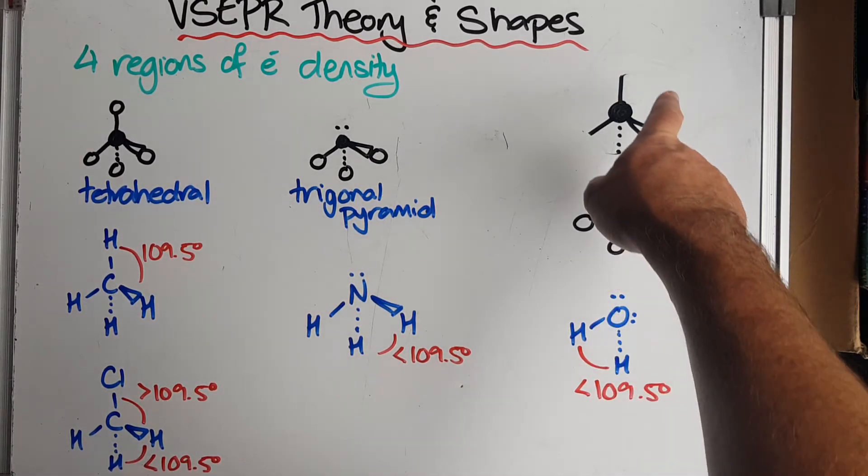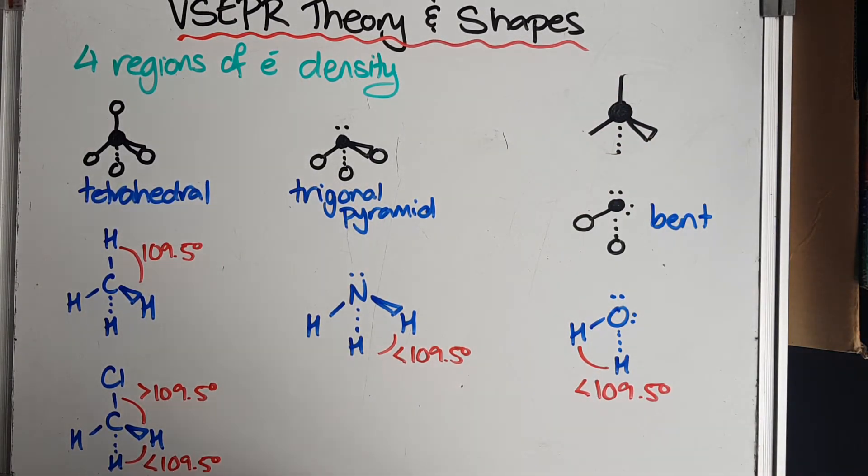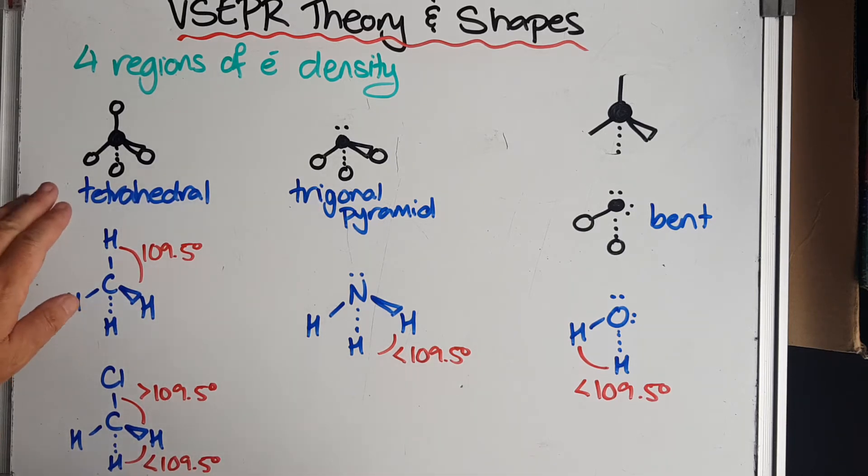So this shape is called a tetrahedron, four-sided, three-dimensional shape. Every face of that shape is a triangle. It allows for three different shapes of molecules when we're looking around the central atom. One is, of course, tetrahedral.